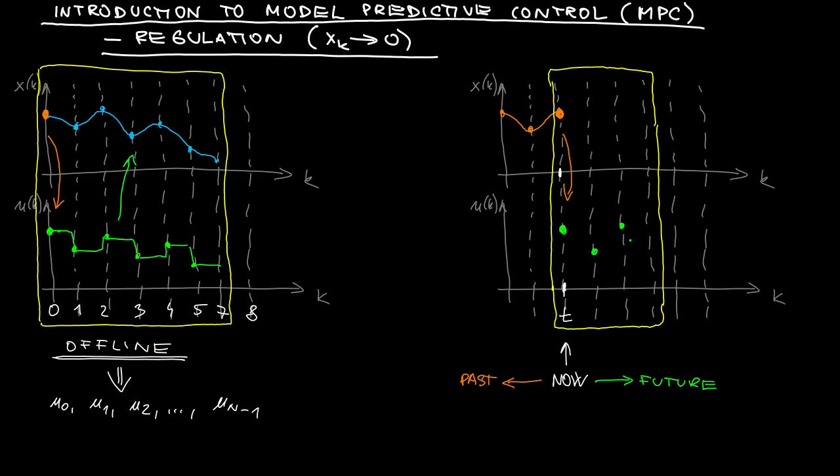We regard the current time as the beginning of our control horizon, and based on the initial time, we compute a sequence of controls. And again, we compute it in such a way that the predicted state trajectory satisfy some constraints and is in some sense optimal.